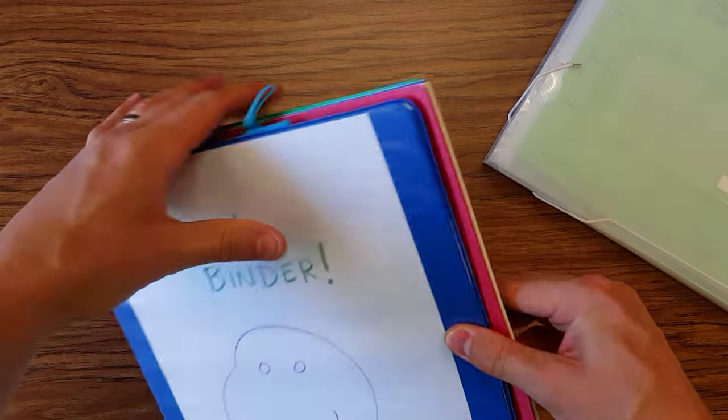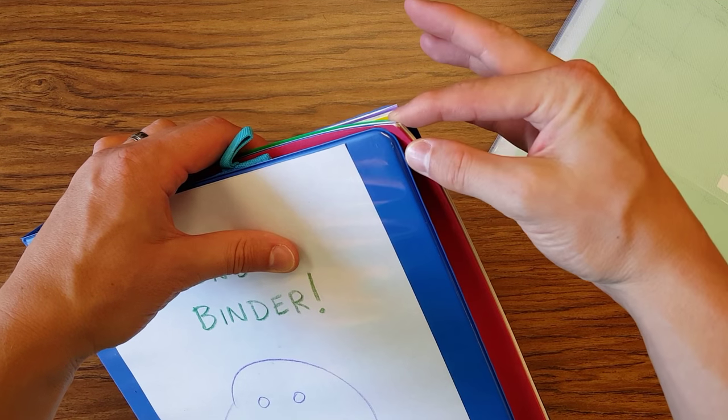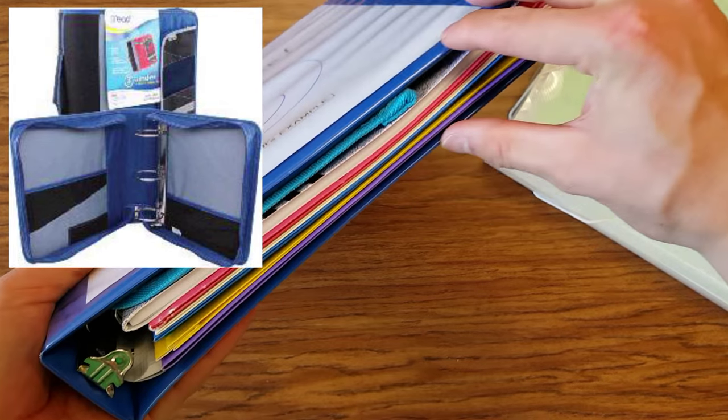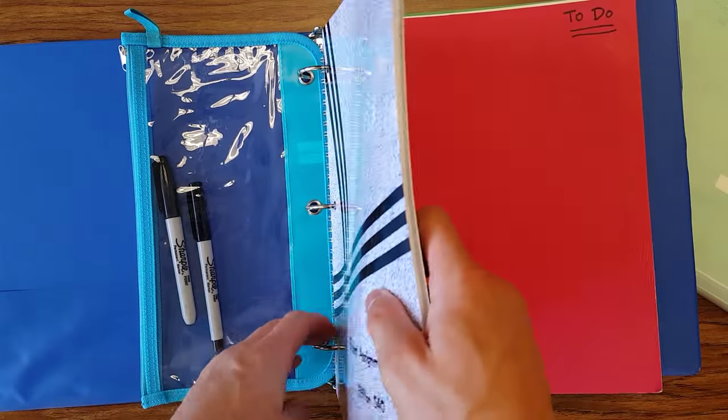However, since I teach fifth grade, in my experience, the corners often get bumped and it doesn't stay very secure. One of the best things I've seen are zipper binders. I even used zipper binders when I was in high school, so I love them. And they stay more secure that way.